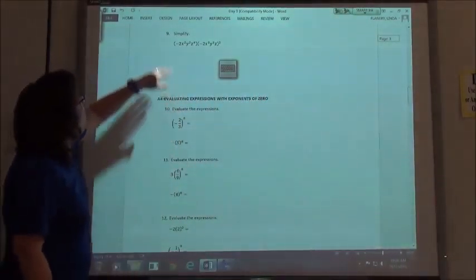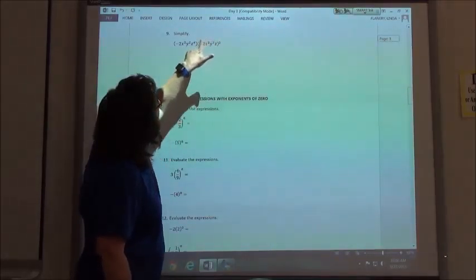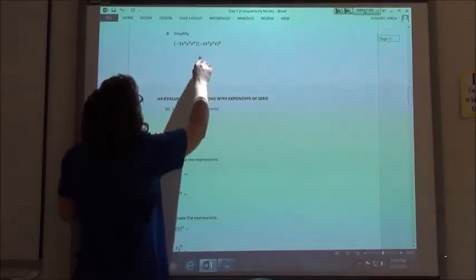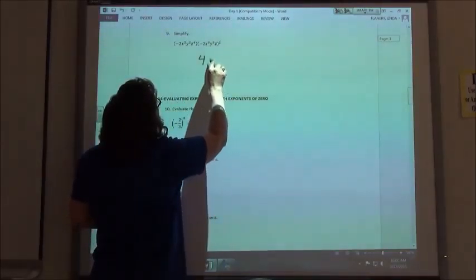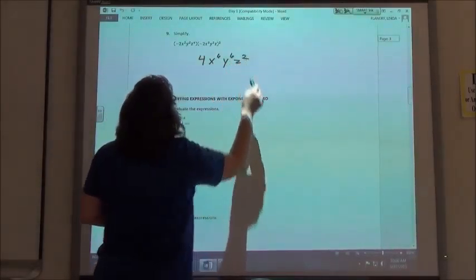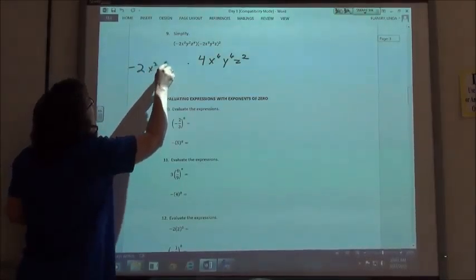If I go ahead and do that one, my exponent is on the outside of the second one here so I'm going to square everything. Negative 2 squared would be positive 4. Multiplying my exponents I'd have x to the 6th, y to the 6th, and z squared. I'm going to multiply that by the negative 2, x squared, y squared, z to the 4th.